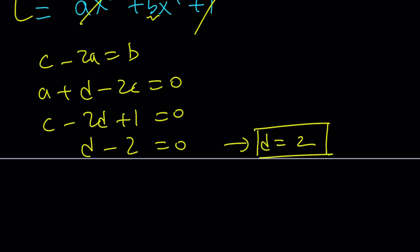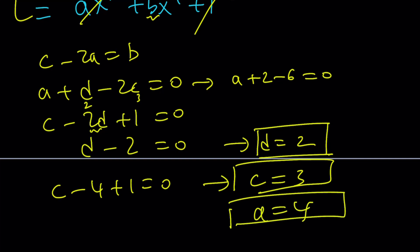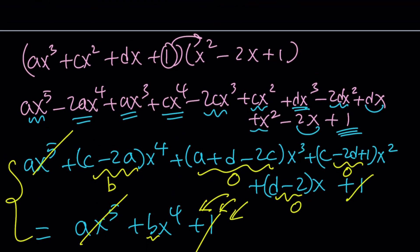If d is 2, I can go ahead and replace d with 2 here. c minus 4 plus 1 is 0, which means c is equal to 3. And then if c is equal to 3 and d is 2, I can replace them here. That gives me a plus 2 minus 6 is equal to 0, which means a is equal to 4. And finally, I have the value of c, which is 3, and I have a equals 4. So b is 3 minus 8, and b is negative 5. Awesome. We got all the values. And now we're good to go.